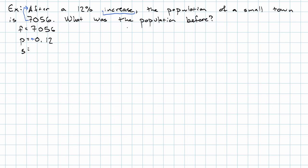Plugging into the formula, we get 7,056 is 1 plus 0.12 times our unknown starting population, which is what we want to know. Doing that addition in the parentheses, 7,056 is 1.12 times S.